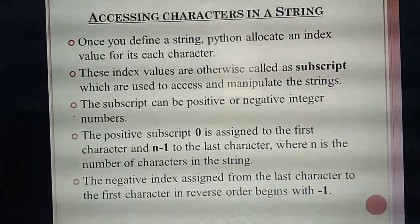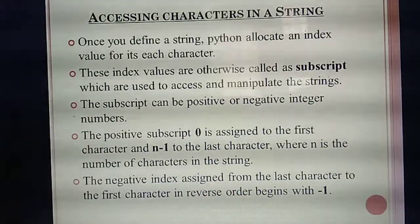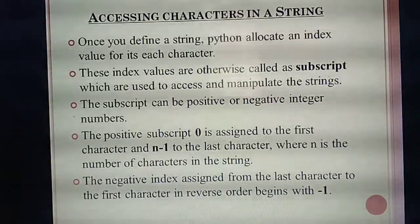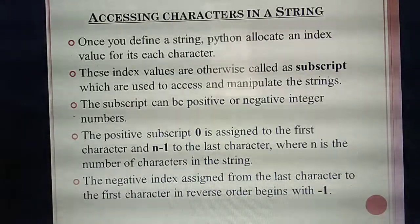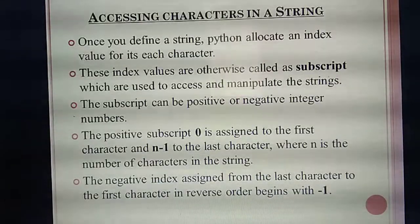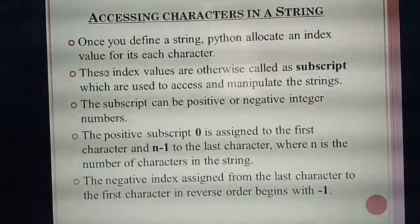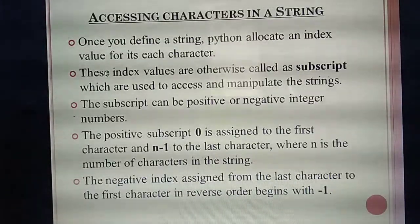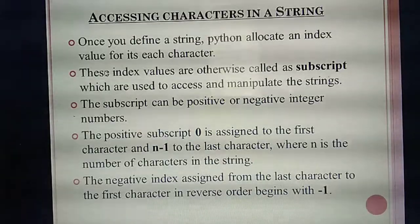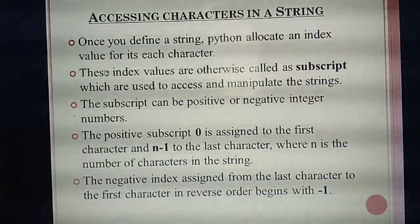Next, accessing characters in a string. Accessing means taking. A string is similar to an array, which you studied in 11th standard. If you are defining one word or one string, Python gives an index value for each character. The index value is also called a subscript — this is an important term. By using the index value, you can access and manipulate the string.